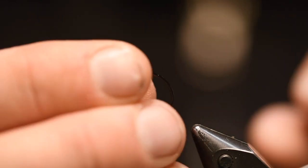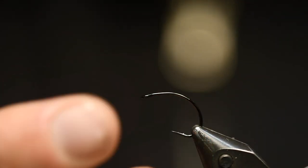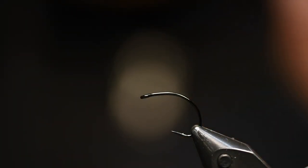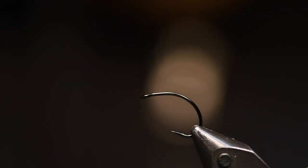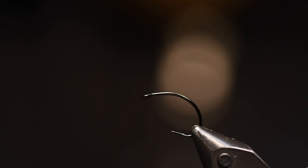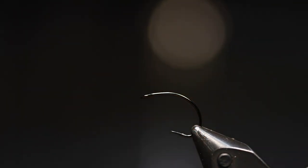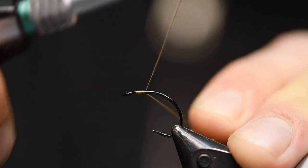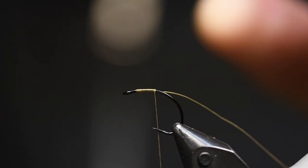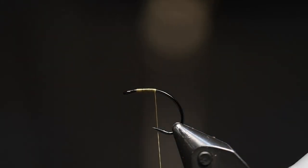For this hook I use a Super Dry hook from RX. You can use a Gammarus hook also, but I want a nice gap because the fish are kind of taking this mayfly so hard, so they can be very tough to hook. So I want a hook with a wider gap. And I use an 8-up thread, that's what I used for making the body also.